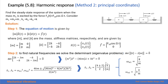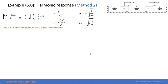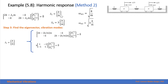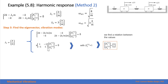Taking the square root of the eigenvalues gives us the two natural frequencies of the system. Once we have found the eigenvalues and natural frequencies, the next step is to find the eigenvectors, which represent the vibration modes. We introduce each eigenvalue into our matrix and solve for the amplitudes. For the first mode, we set the first amplitude equal to 1 and find the second is also 1, meaning both masses move in the same direction with the same magnitude.